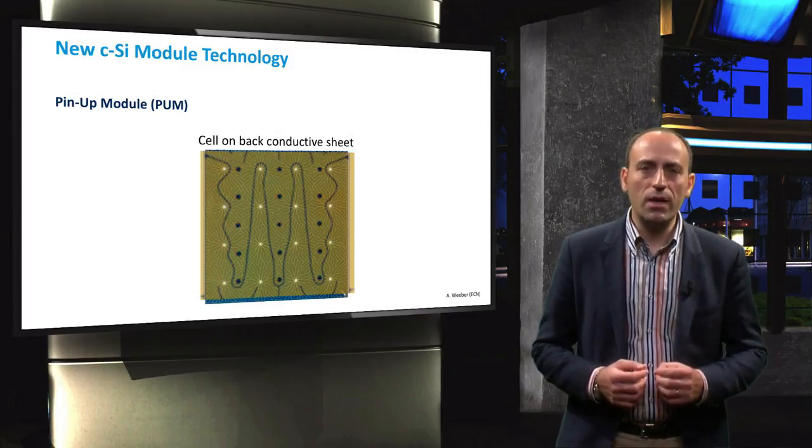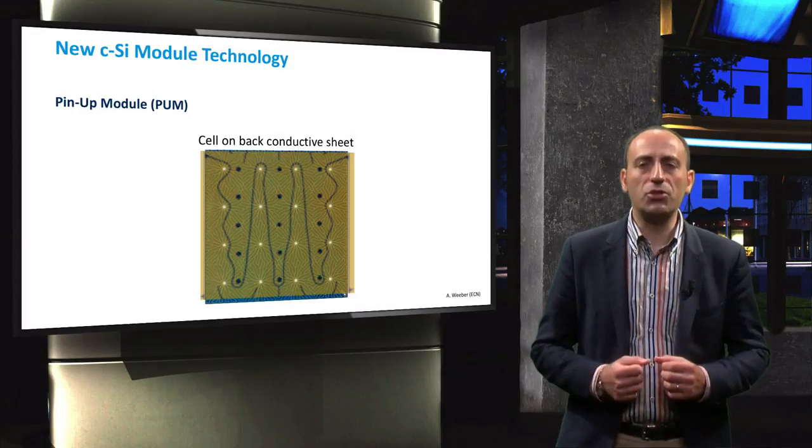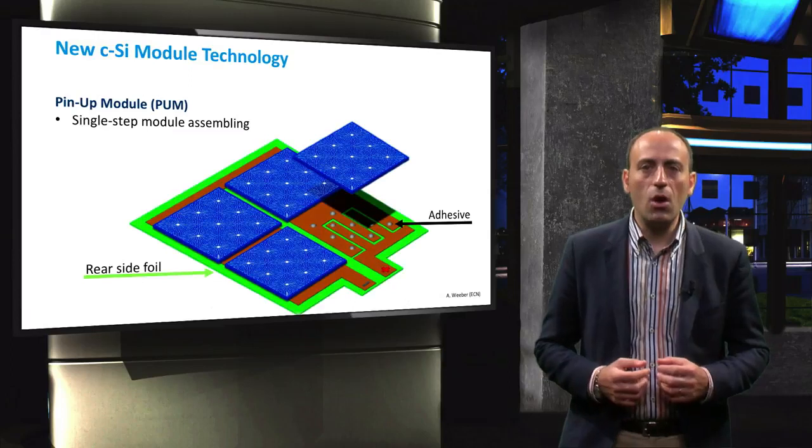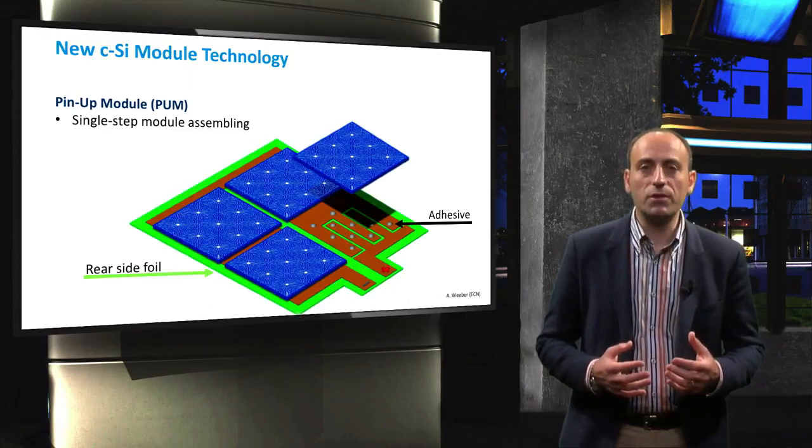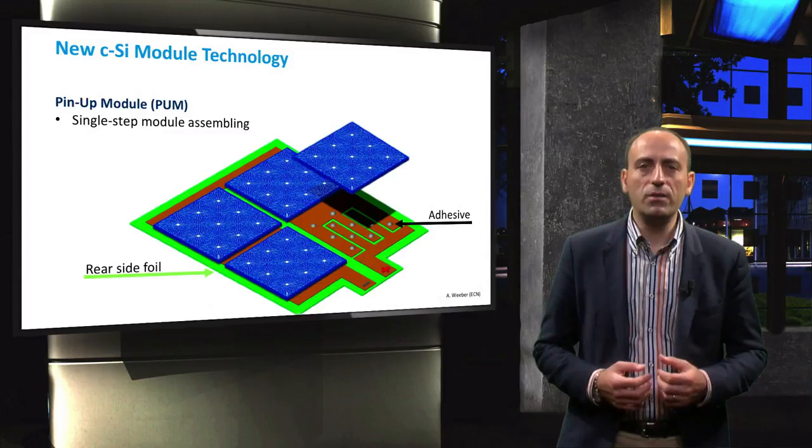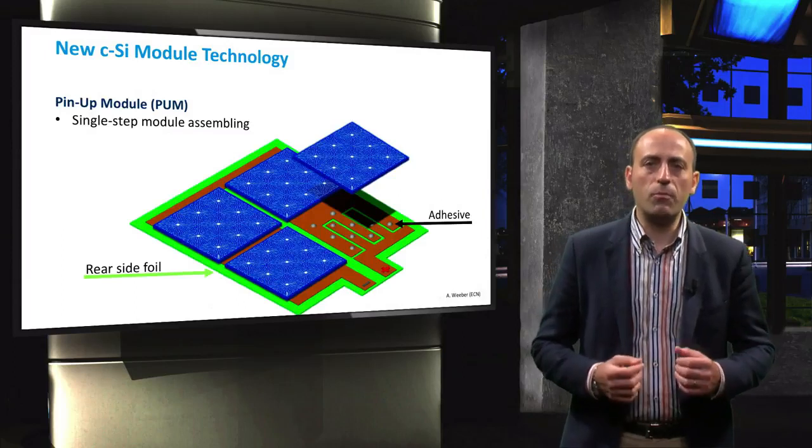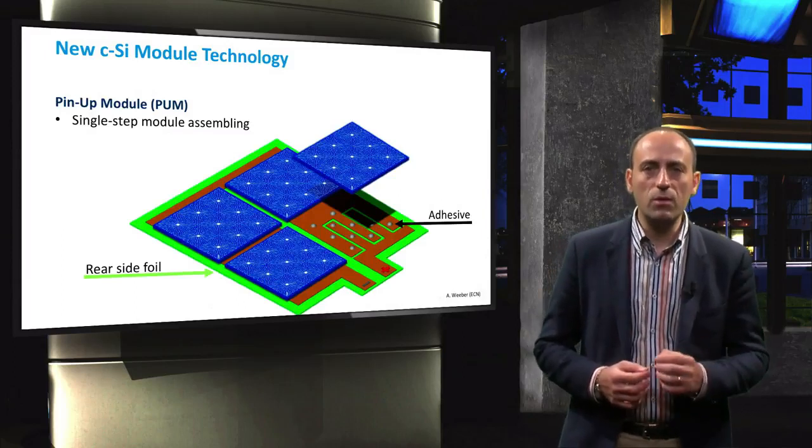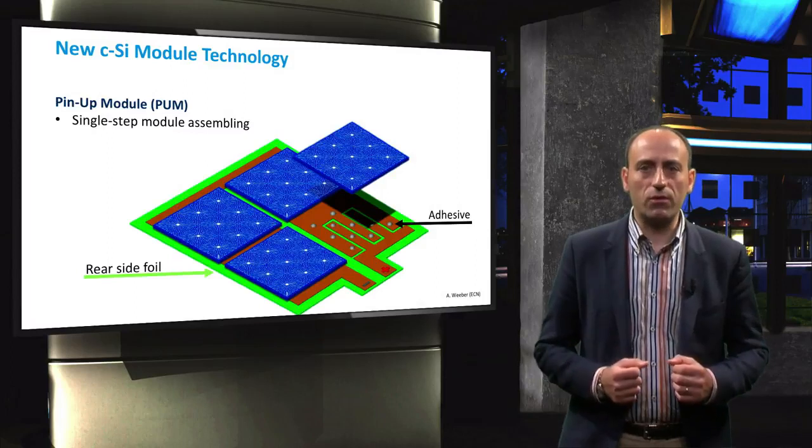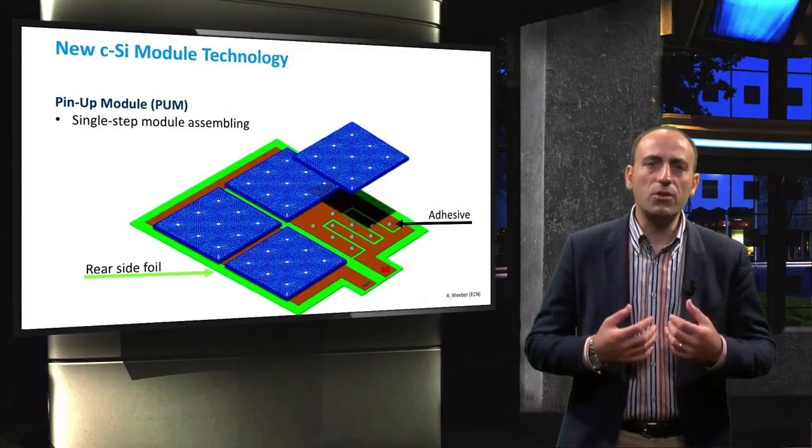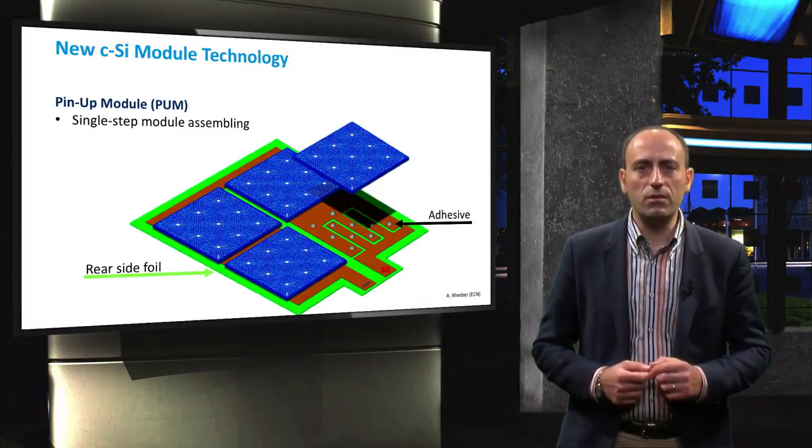With the pin-up module design, the current cell production chain can almost remain unchanged. Indeed, for a fully automated module production, only the series connection of cells needs to be changed. For the PUM design, the cells are glued to the printed circuit by means of a conductive adhesive. In principle, it is therefore possible to interconnect the individual cells in a module without loss in fill factor. For conventional manufacturing, the stress in the solder at the joint causes an increase in series resistance which decreases the fill factor.